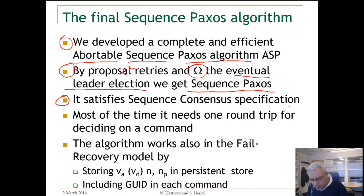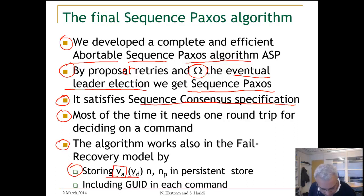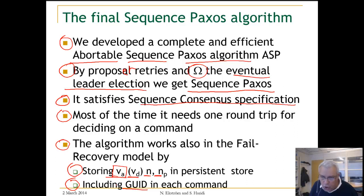This gives us Sequence Paxos — a variant of Multi-Paxos. The algorithm satisfies the sequence consensus specification. Most of the time it needs one round trip to decide on a command, and it works in the fair recovery model where processes can crash and come up again, as long as crashes happen a finite number of times. This is ensured by having the acceptor store the accepted sequence (which includes the decided sequence), the current round number, and its promise. Each proposer should include a globally unique identifier in each message or command to guarantee uniqueness and avoid command duplication.